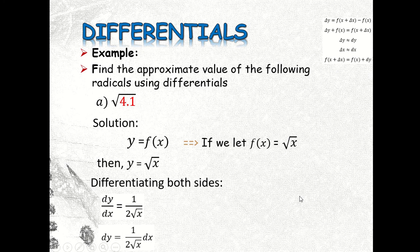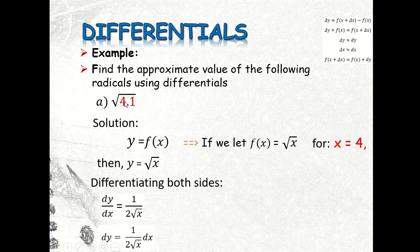If we let f of x equal to square root of x, we set x equal to 4. Why 4? Because 4 is a perfect square. Square root of 4.1 is just slightly above 4, so the square root of 4 is 2, and we can expect our answer to be 2-point-something. So we assume x equal to 4.